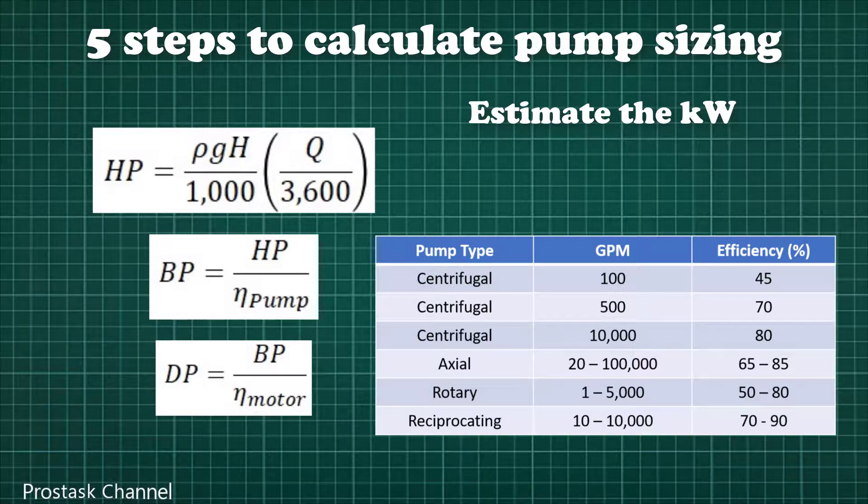And last item is driver power or DP. To calculate this value we require to know about motor efficiency. The electrical motor is considered as high efficient equipment which has the efficiency around 85 to 95 percent.